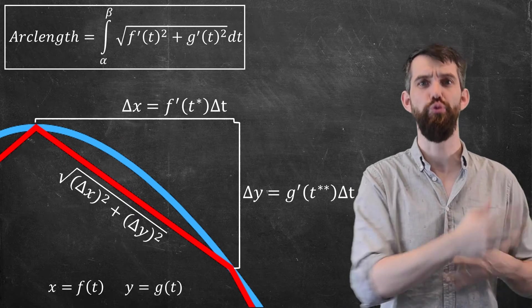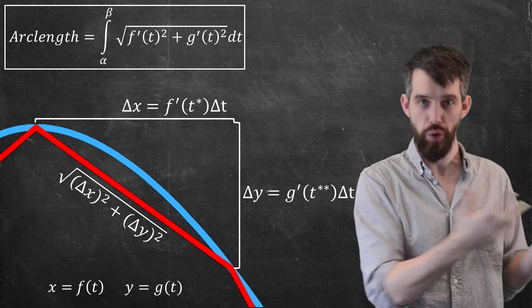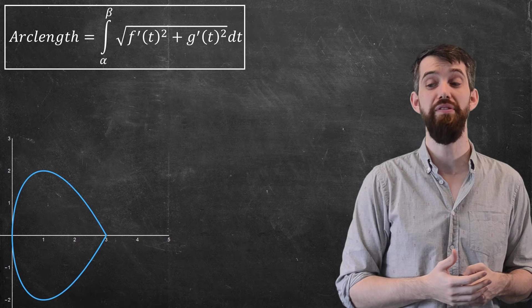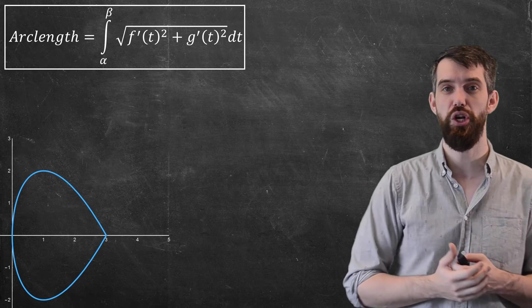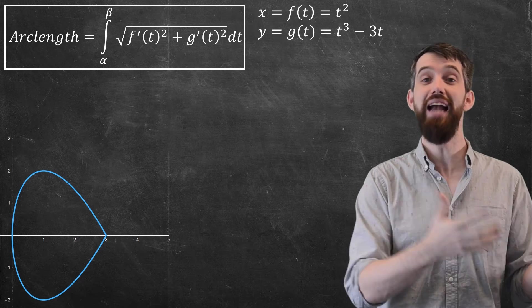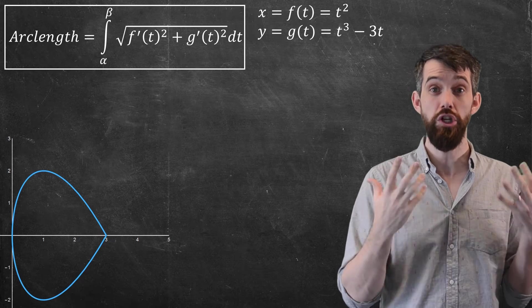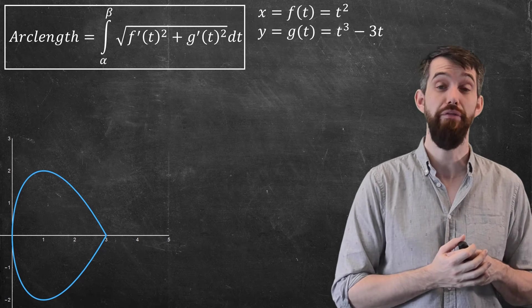So let's go back to the familiar one we've seen a couple times now, this particular curve, where x is t squared and y is t cubed minus 3t. And I'm in particular going to focus on just the loop. That's what I want to figure out, the arc length of that loop.